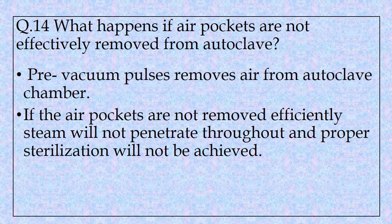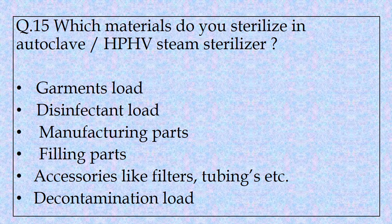Question number fourteen: What happens if air pockets are not effectively removed from the autoclave? Pre-vacuum pulses are used to remove air from the autoclave chamber and replace it with steam. If air pockets are not removed efficiently, steam will not penetrate throughout and proper sterilization will not be achieved. Question number fifteen: Which materials do you sterilize in autoclave or HPSP steam sterilizer? Garments and disinfectant loads are taken in autoclave. We also sterilize manufacturing parts and filling parts, along with accessories like tubings and filters. Decontamination loads, usually with media plates, are also sterilized in the autoclave chamber.